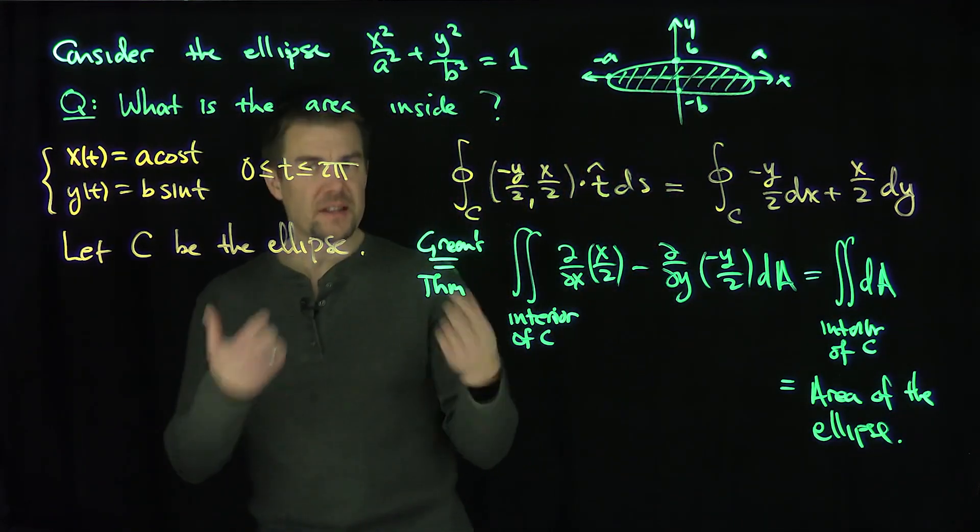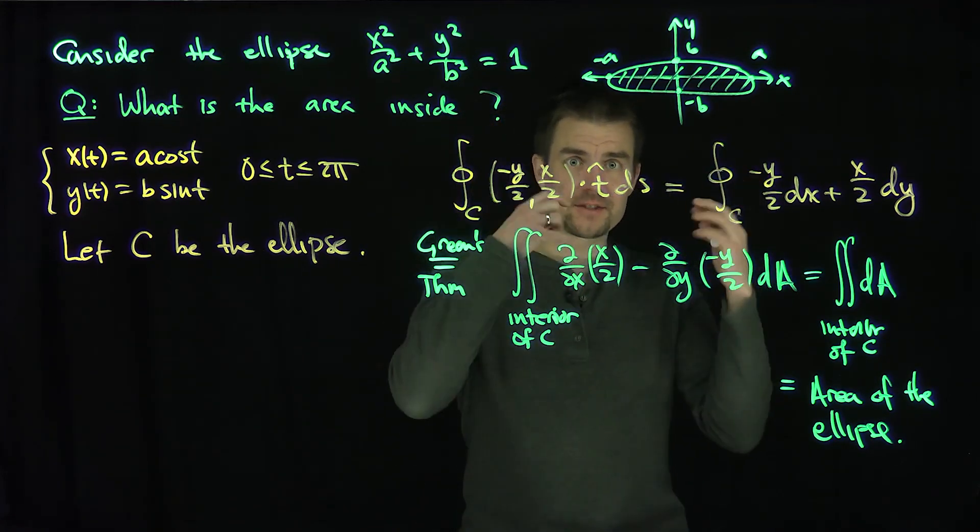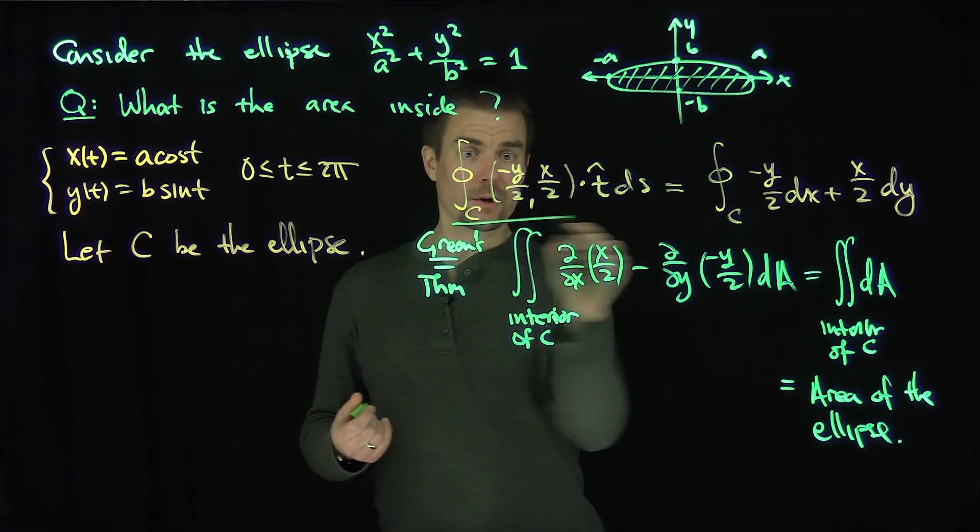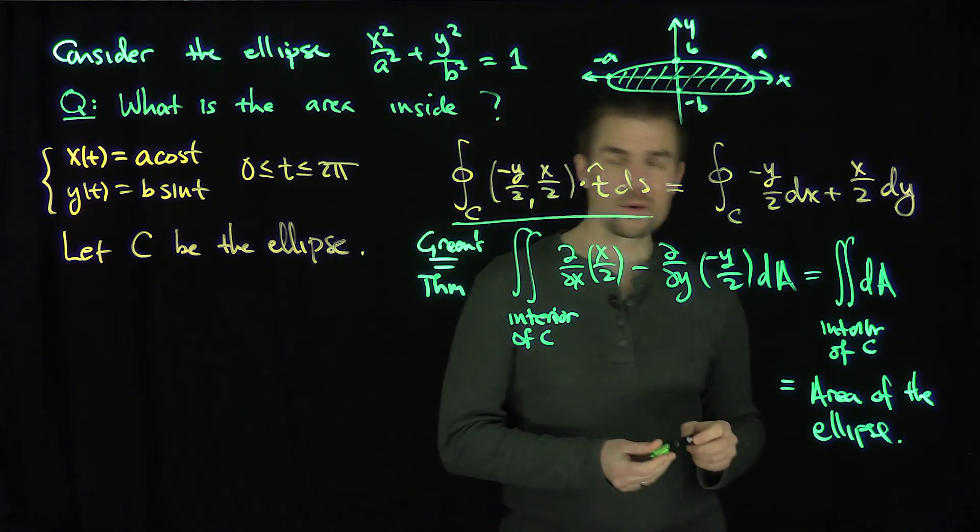When I say the area of the ellipse, I mean the area interior to the ellipse. The ellipse itself is the boundary curve, right? But the area inside the ellipse is what we're after. Now, so that's this formula over here, this flow integral will give me the area of the ellipse. So let's compute the flow integral.